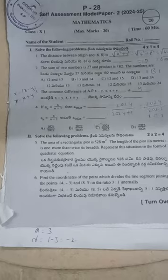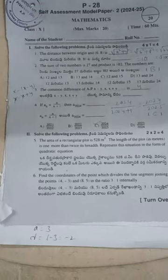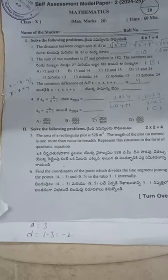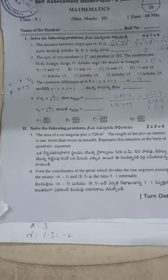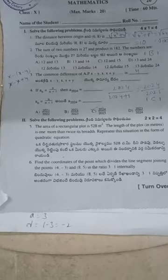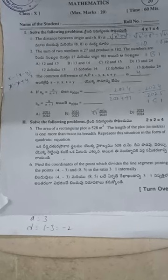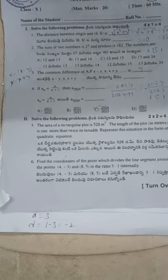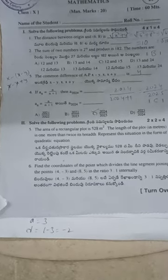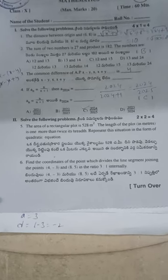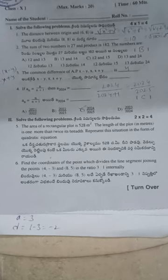The common difference of the AP: x − 5, x, x + 5. Common difference = a₂ − a₁ = x − (x − 5) = 5. Next, if aₙ = a/(n(n+1)), then a₂₀₂₄ = 2024/2025.